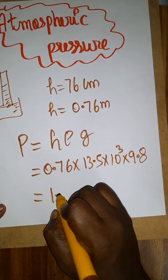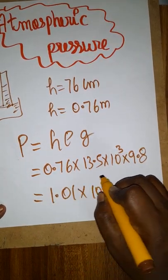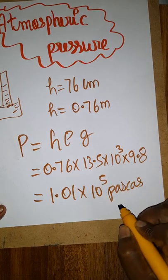This calculation will give us 1.01 times 10 to the power 5 pascals. This is atmospheric pressure.